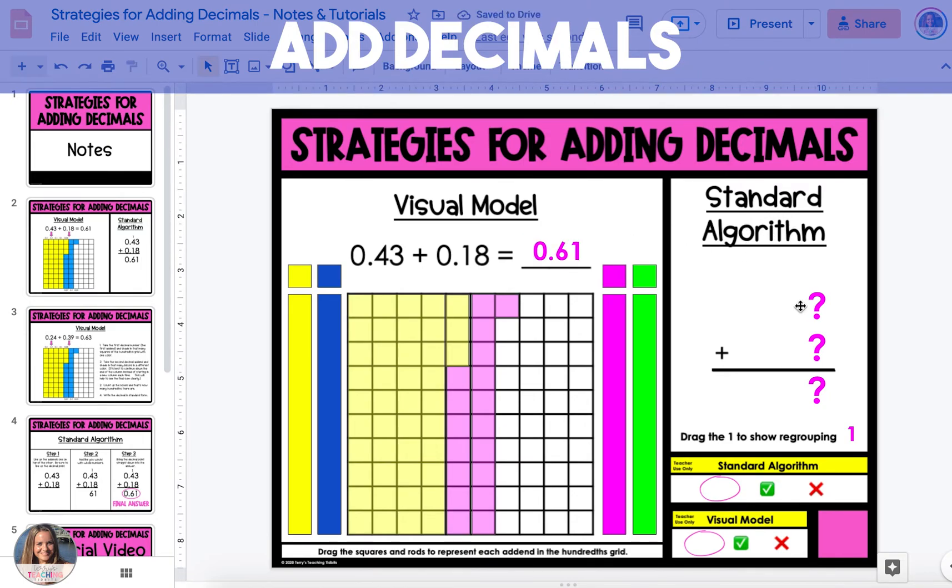Now we're going to solve the same problem using the standard algorithm. Type the first addend into the top text box and type the second addend into the second text box. Make sure that the decimal points are lined up.